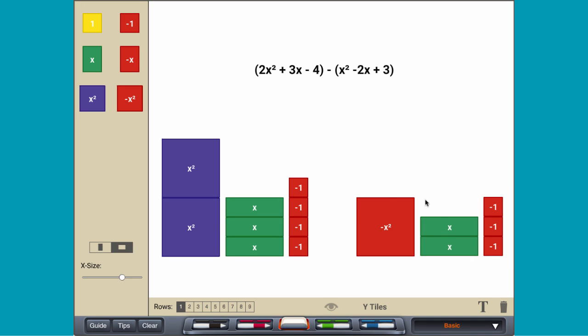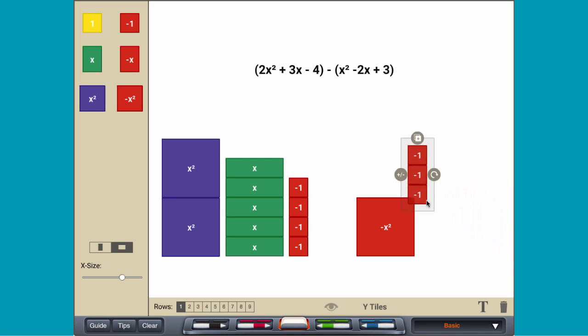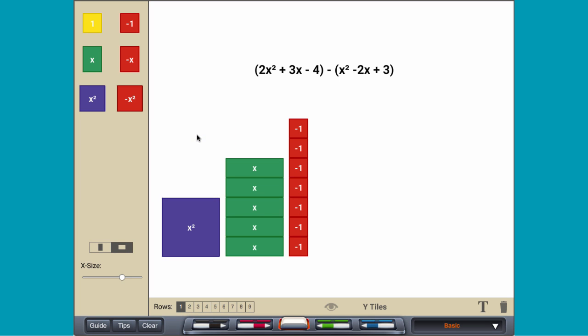The sum after grouping like terms and creating zero pairs is x squared plus 5x minus 7.